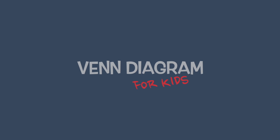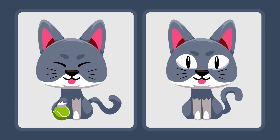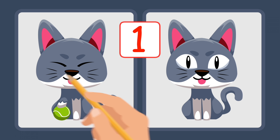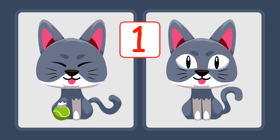Venn Diagram for Kids. Here we have two very similar pictures of a cat. Let's find the differences. The first difference is that the cat on the left has its eyes closed, while the cat on the right has its eyes open.